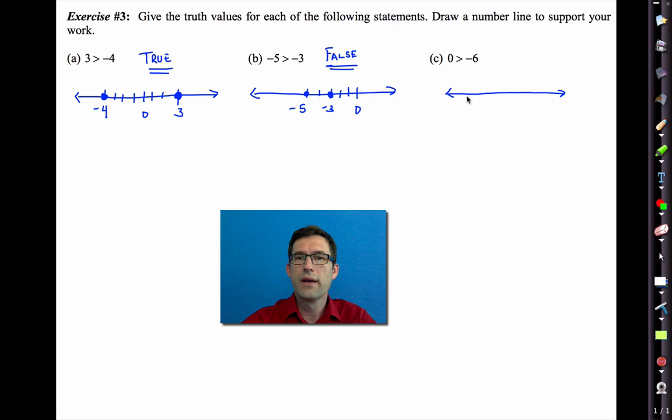0 is greater than negative 6. Well, if I draw a little number line, I put 0 here. 1, 2, 3, 4, 5, 6. Negative 6 here. There's my 0. There's my negative 6. Since 0 lies to the right of negative 6, it is larger. It is greater than it. So that is also true.